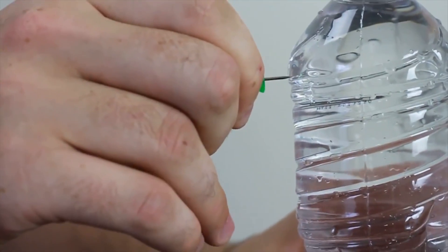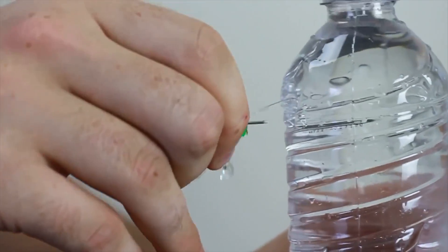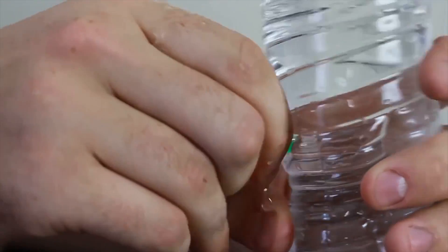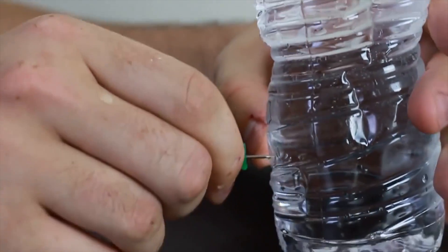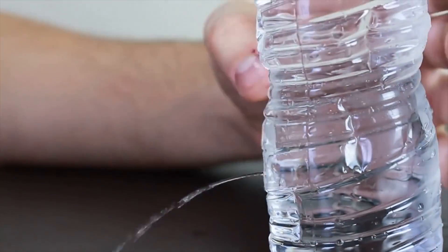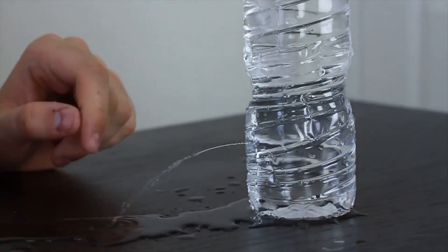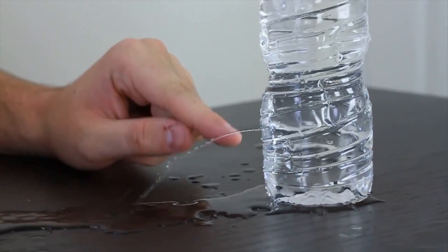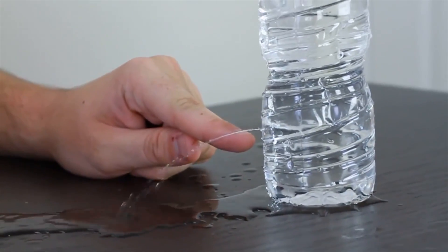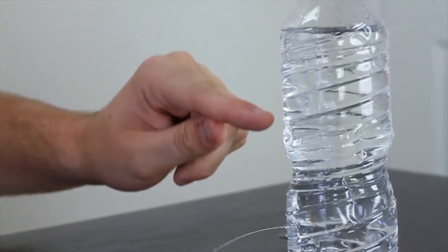So we're gonna make a hole, one on the top, one in the middle, and one in the bottom. And then we're gonna open the bottle. All right, the question is, why does the water leak out only from the bottom but not from these two?